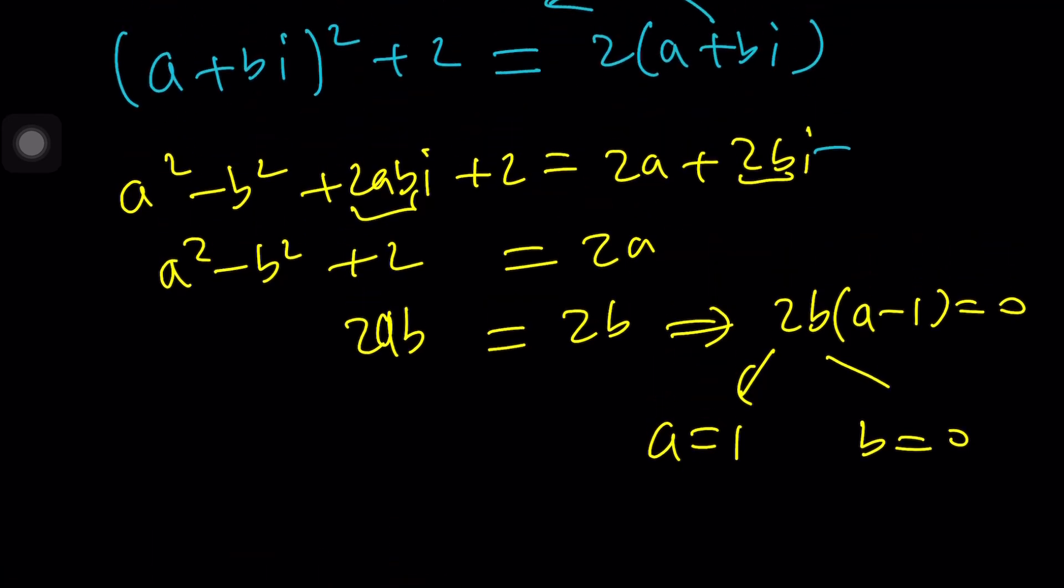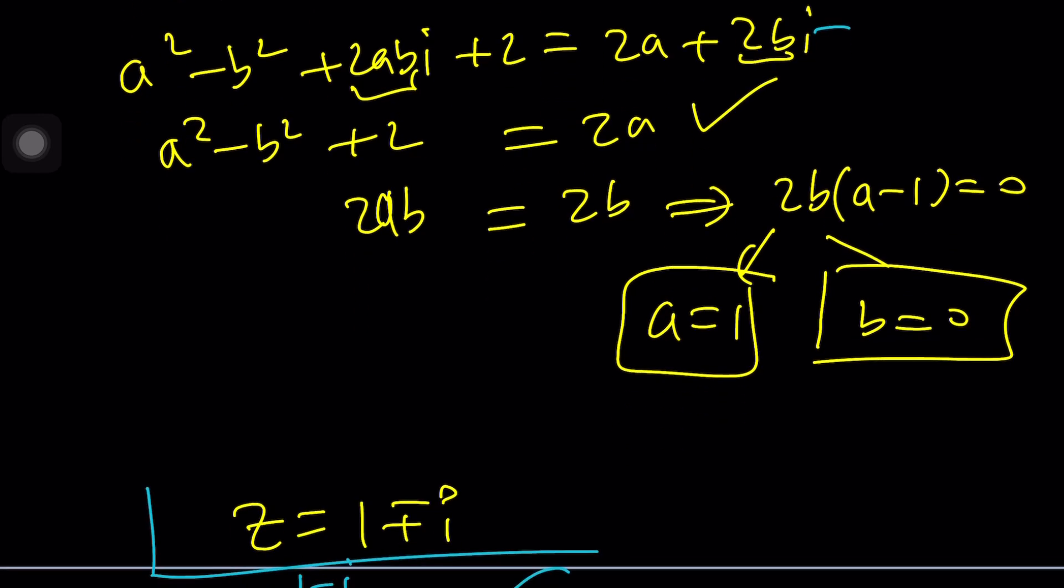This gives you two things: either a is equal to 1 or b is equal to 0, and you can test both out. You kind of need to plug them into the first equation, which is this one. If a is equal to 1, then I'm getting 1 minus b squared plus 2 equals 2. 2 cancels out and b squared equals 1 gives you b equals plus minus 1. Along with this you get 1 plus minus i. Same solutions, right? Good.